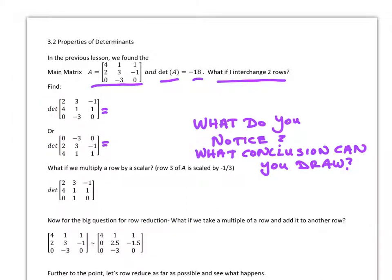Find the determinant and tell us what happens. So what do you notice? What do you notice with your answer here and your answer here compared to this one right here? So what conclusion do you think we can draw based on a couple examples? So that's the conclusion that you can draw if we interchange two rows.